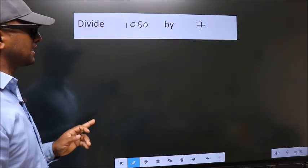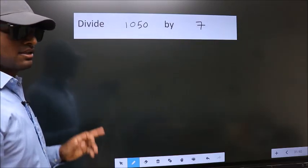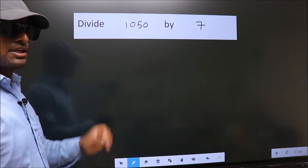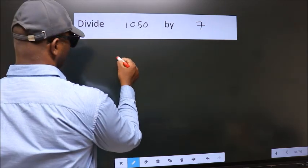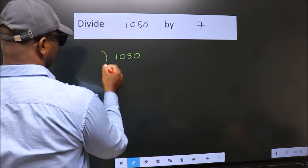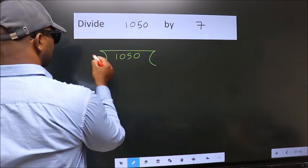Divide 1050 by 7. To do this division we should frame it in this way. 1050 here, 7 here.